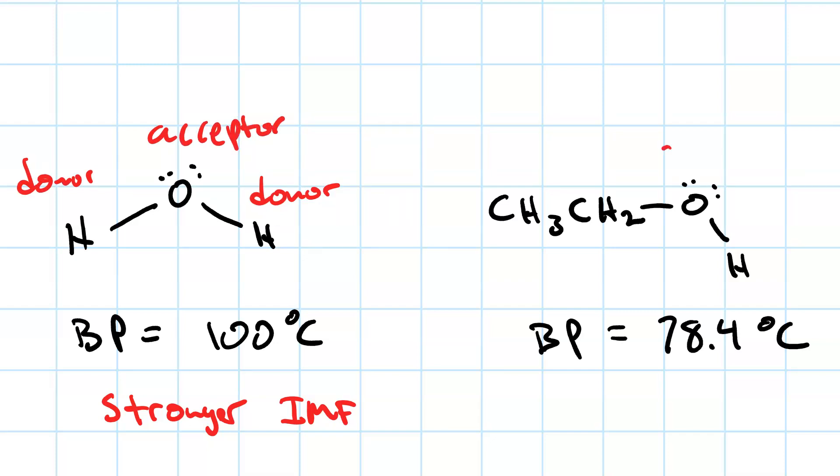Ethanol, on the other hand, the oxygen is an acceptor and the OH hydrogen is a donor, but there is no other donor site. This bond is between oxygen and carbon. It's not between oxygen and hydrogen. Hence, this is not a donor.